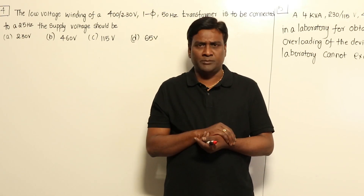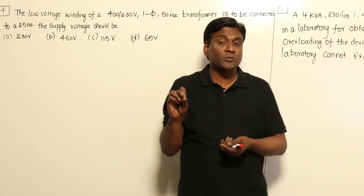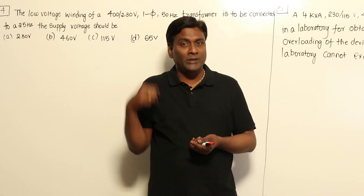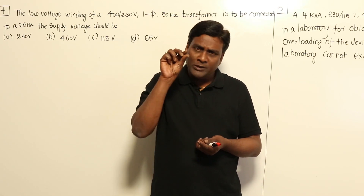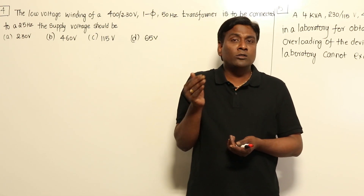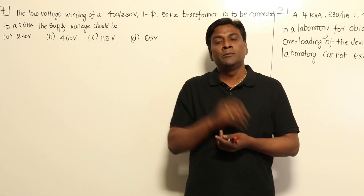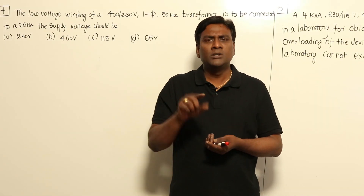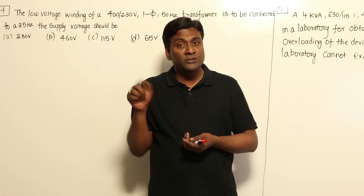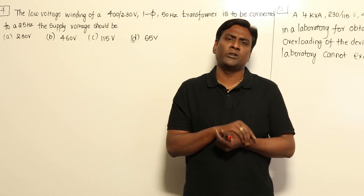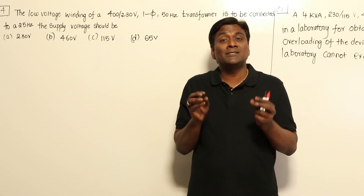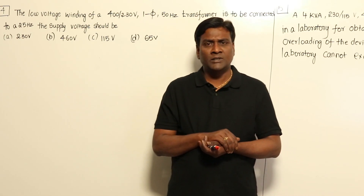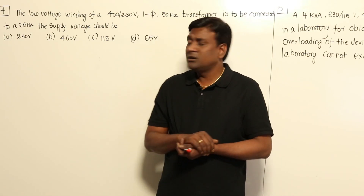So these are two contradictory statements: air gap should be least possible because, from our previous problem, the current needed to set up a given flux should be less. But from a noise point of view, air gap should be more to reduce noise. So 'air gap should be less' is correct from a current point of view, and 'air gap should be more' is correct from a noise point of view. To understand machines, we must understand contradictory statements properly.